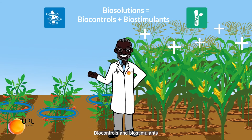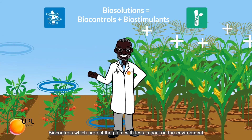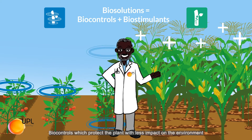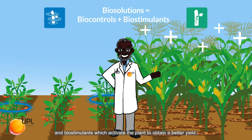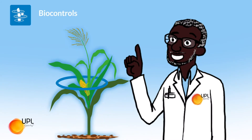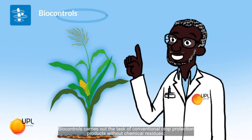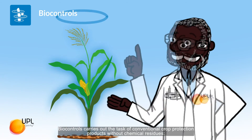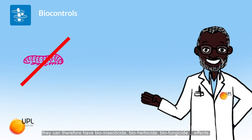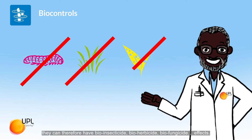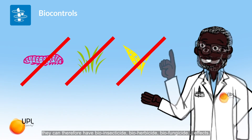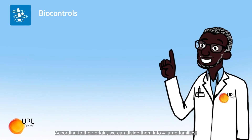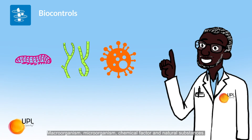Bio solutions group two categories of products: biocontrols and biostimulants. Biocontrols protect the plant with less impact on the environment, and biostimulants activate the plant to obtain a better yield. Biocontrols carry out the task of conventional crop protection products without chemical residues. They can therefore have bio-insecticide, bio-herbicide, and bio-fungicide effects.